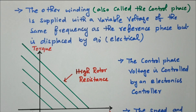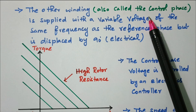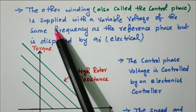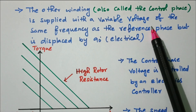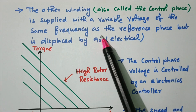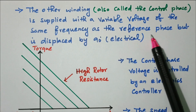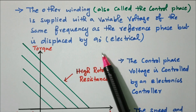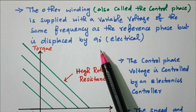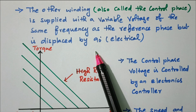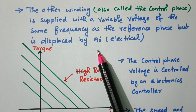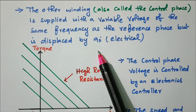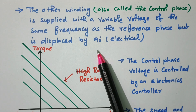The main winding, also called the reference or fixed winding, is supplied from a constant voltage source Vm at angle zero degrees. The other winding, also called the control phase, is supplied with a variable voltage of the same frequency as the reference phase but displaced by 90 degrees electrical. This 90-degree phase difference between control phase and fixed phase gives us position or speed control for any small change in voltage or current.